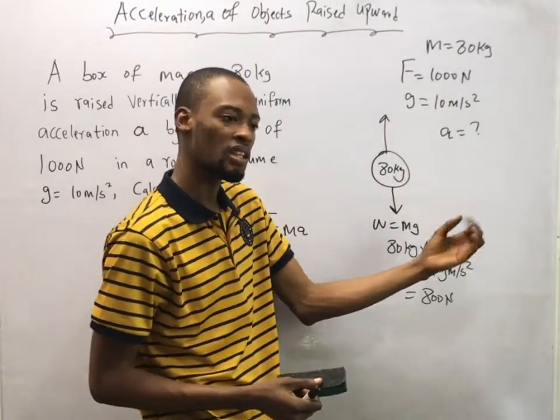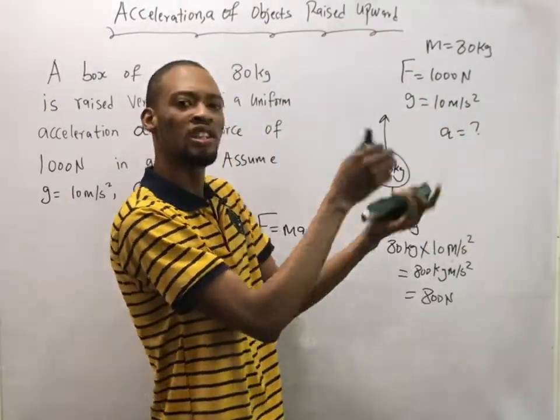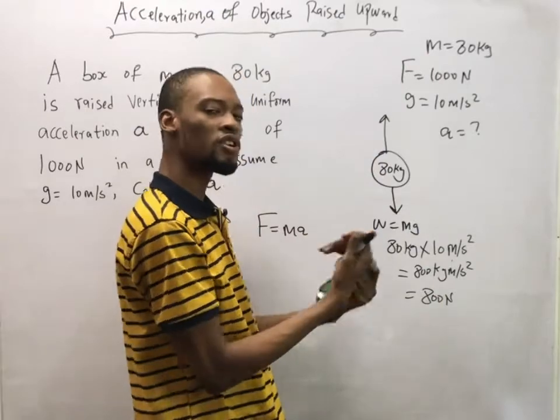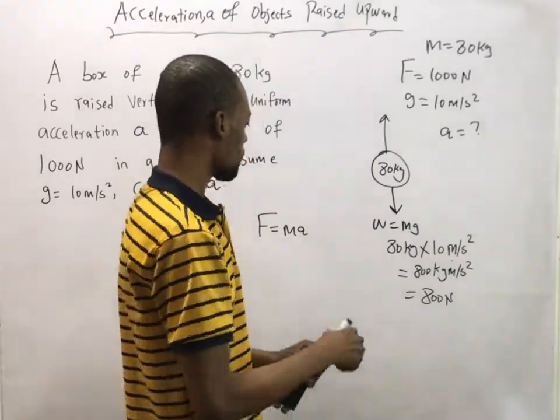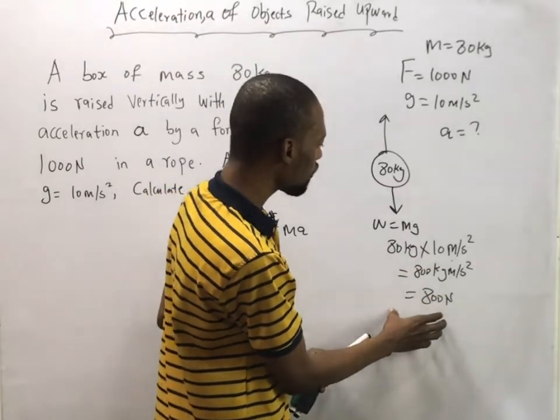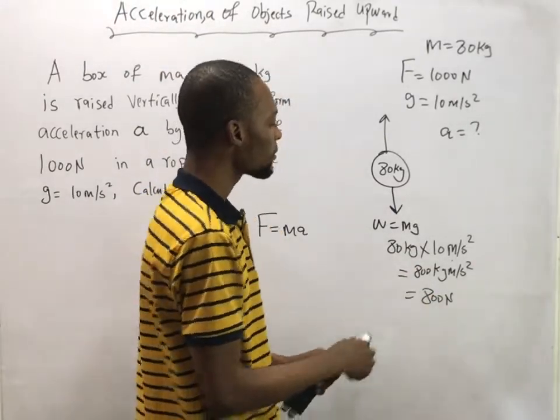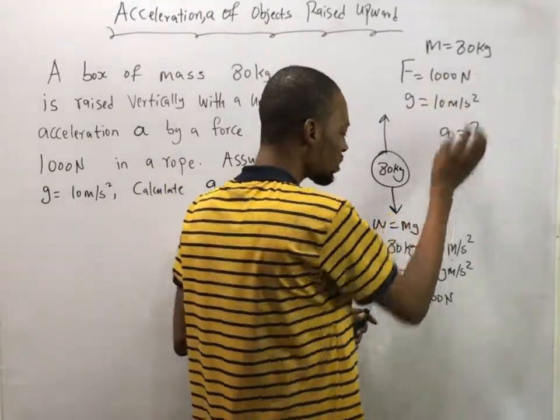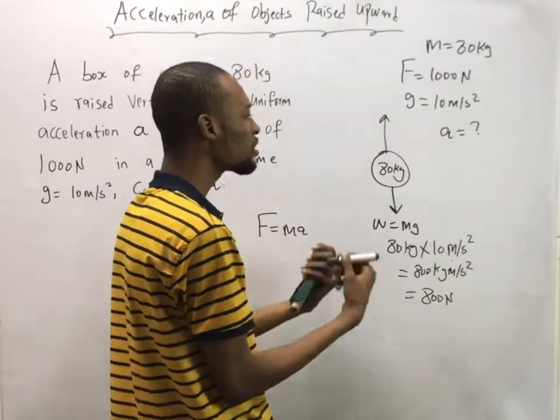But weight acts downward and is opposite to the force applied. If I'm applying force upward, the weight is definitely opposite the force applied. Therefore the total force on the body will simply be this force, 1000 Newton, minus weight. That will give you the net force.